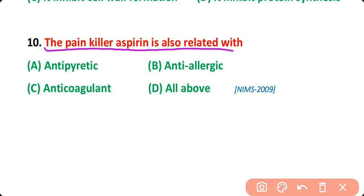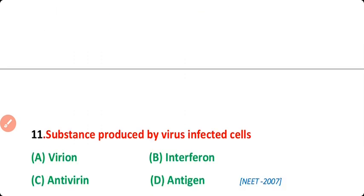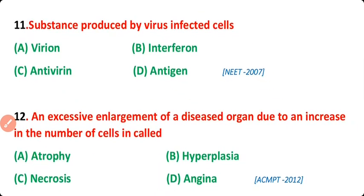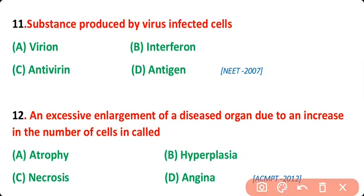Question number 10: The painkiller aspirin is also related with anti-pyretic agent, anti-allergic agent, anti-coagulant agent, or all of the above? The correct answer is option D. Aspirin is anti-pyretic, anti-allergic, and anti-coagulant.